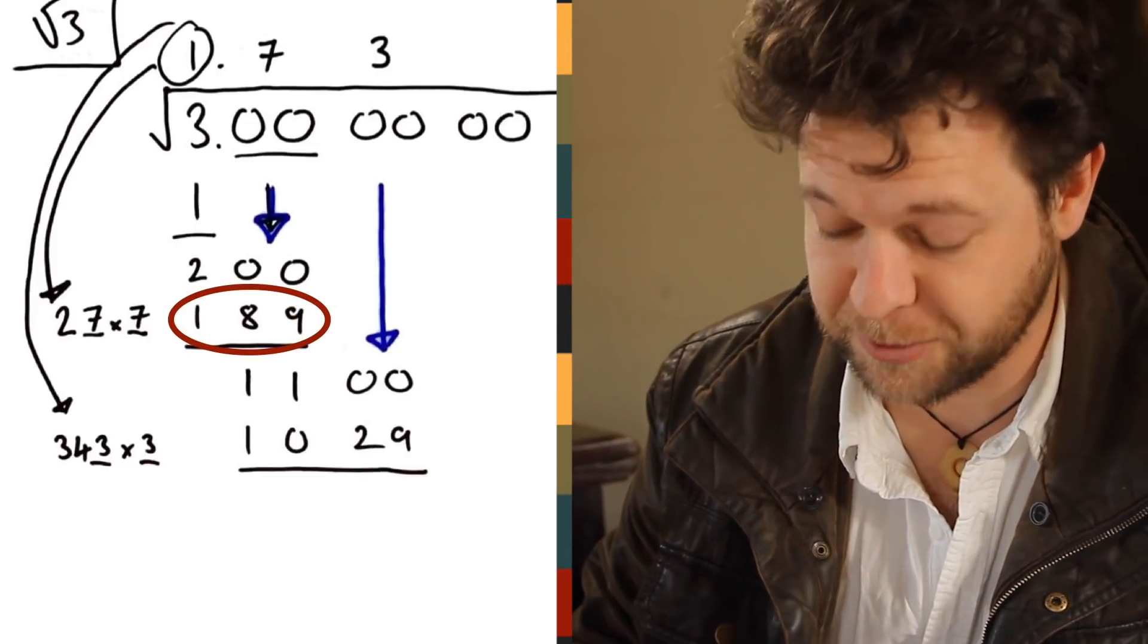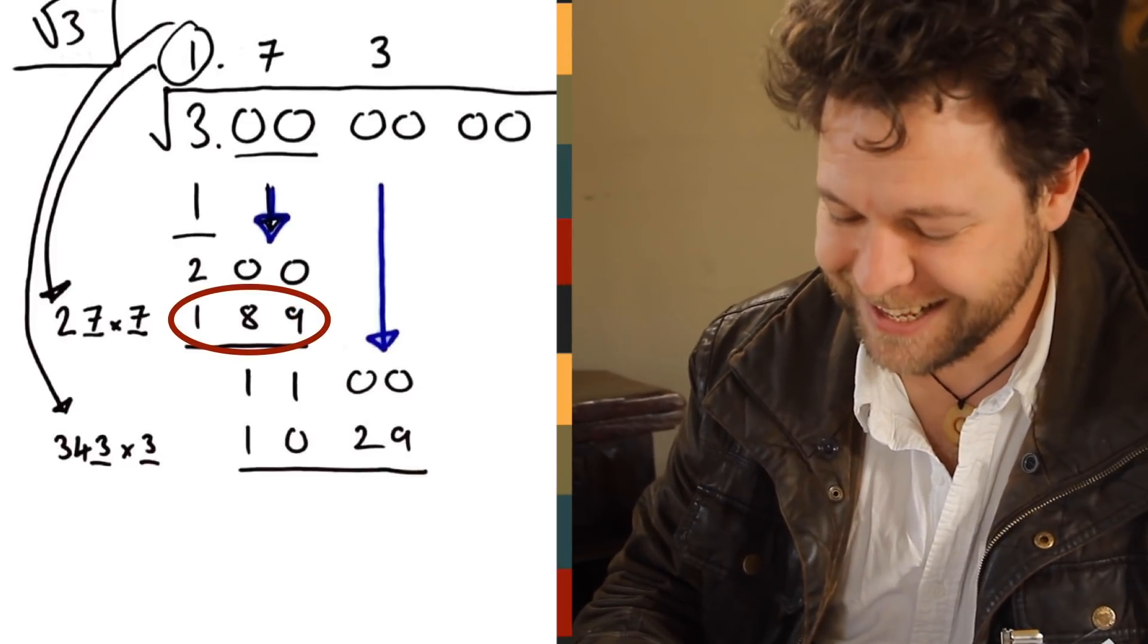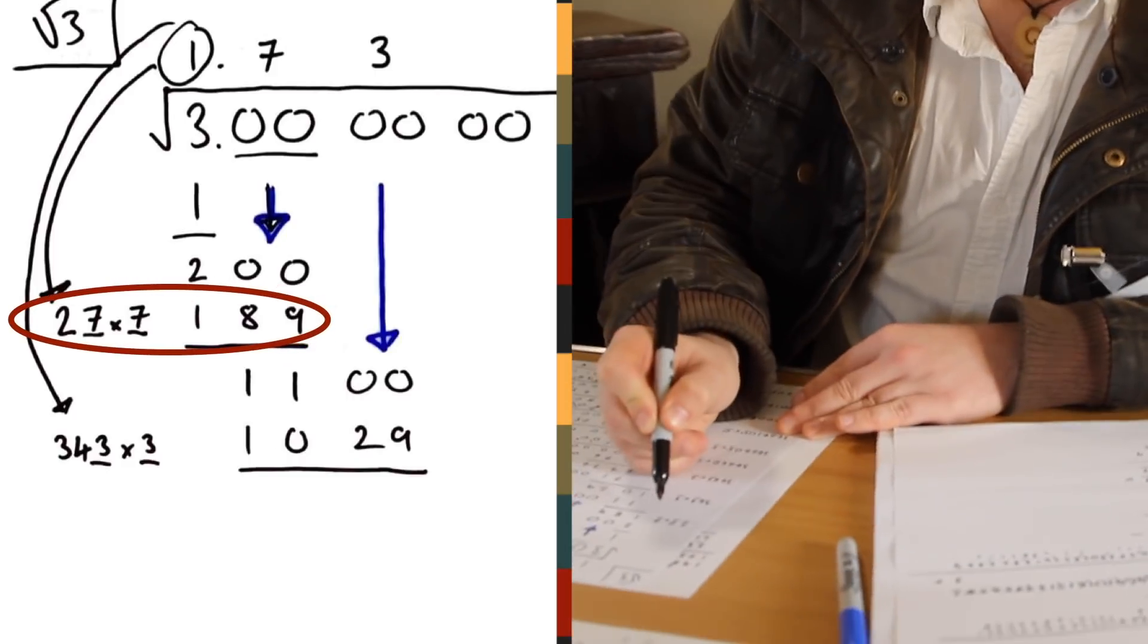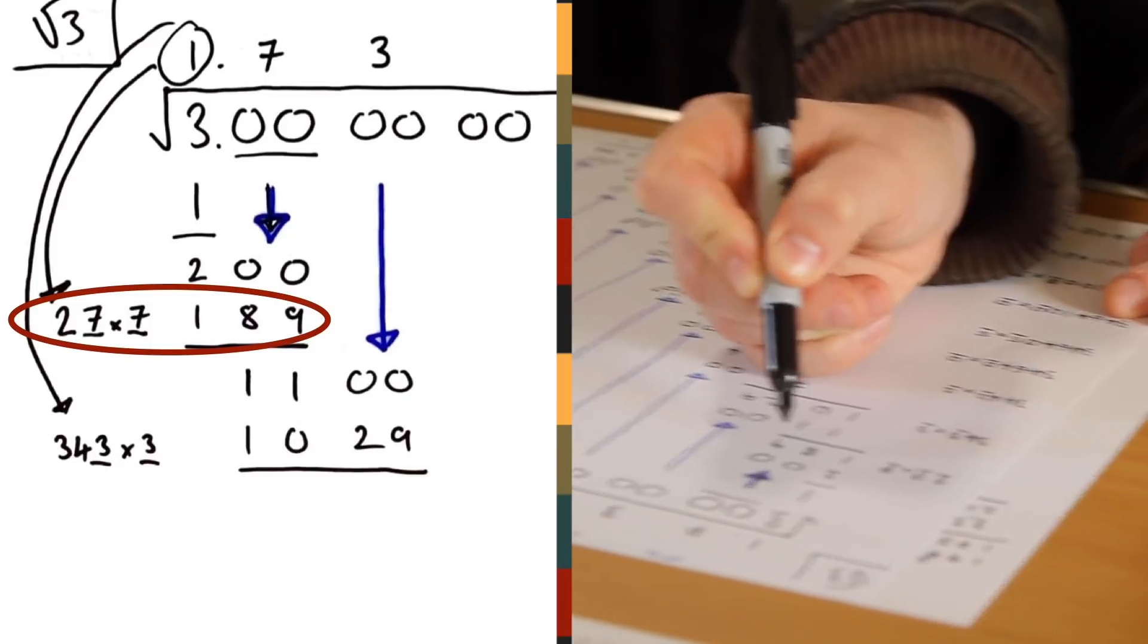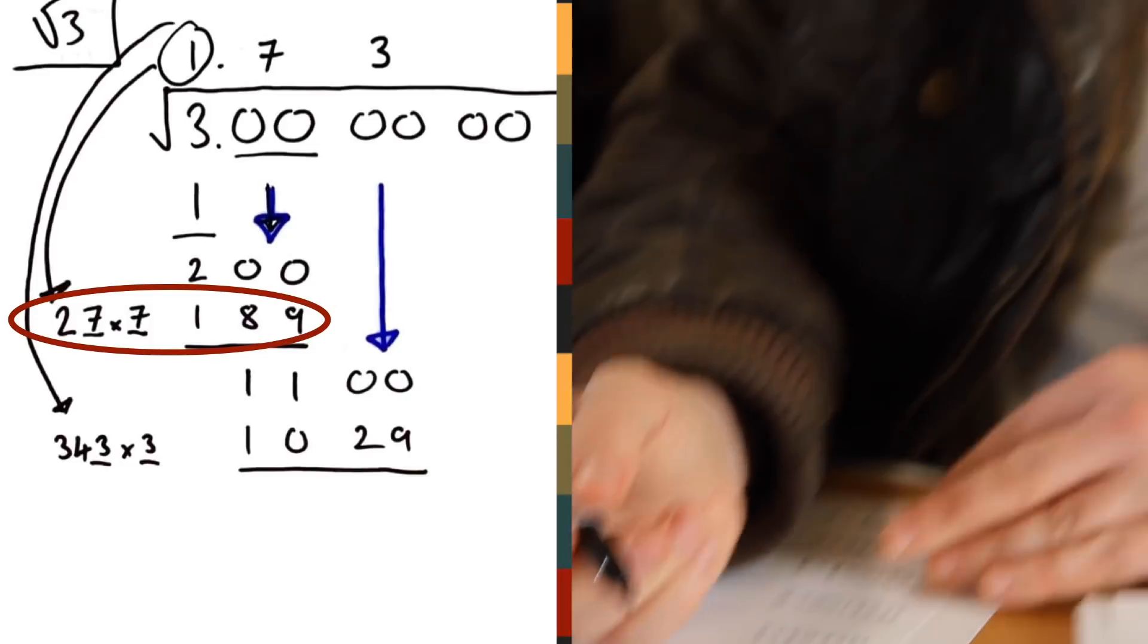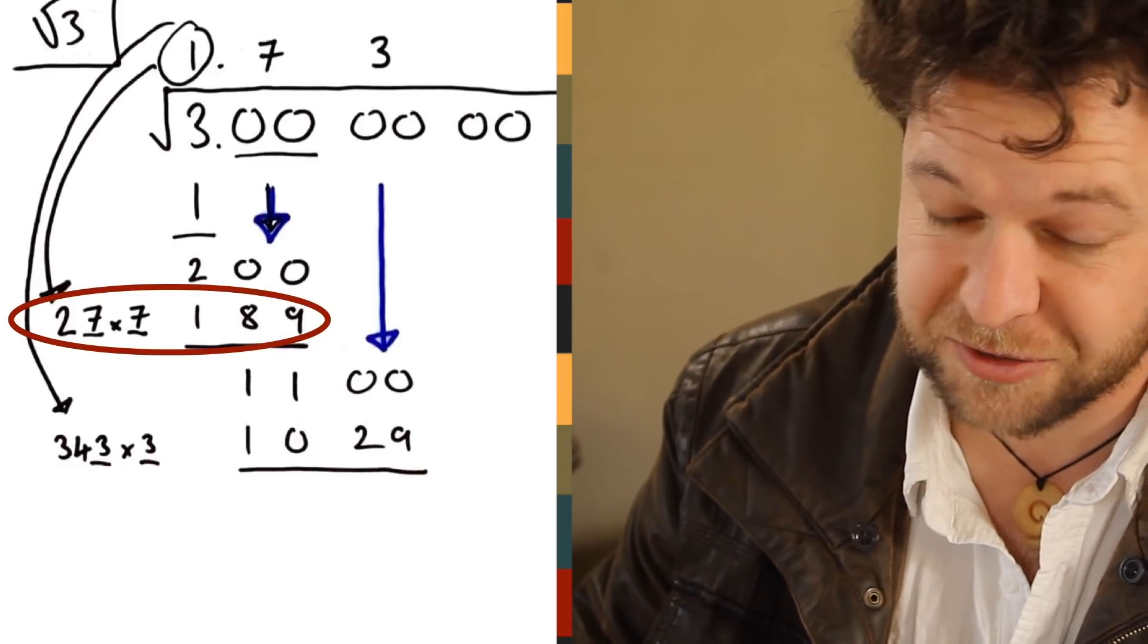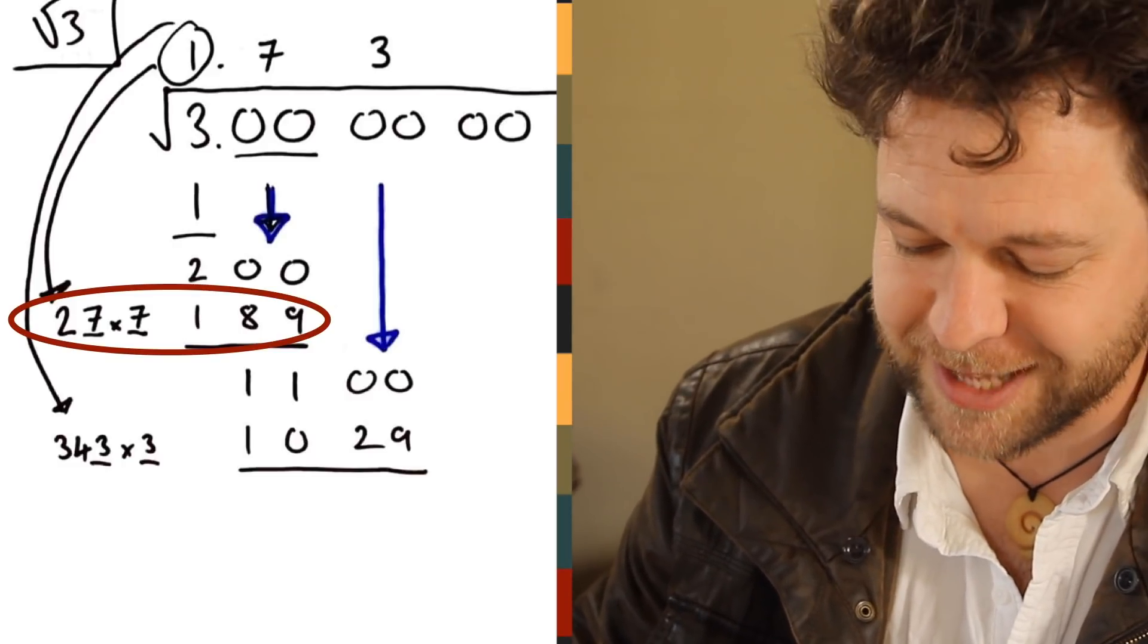If this is sounding awkward to you, it sounds awkward to me too. In this case though, by way of example, I've got 2 and a gap times a gap to give me something less than 200. It turns out 7 fits. 27 times 7 is 189, which is less than 200. I couldn't go any higher because 28 times 8 is too big.